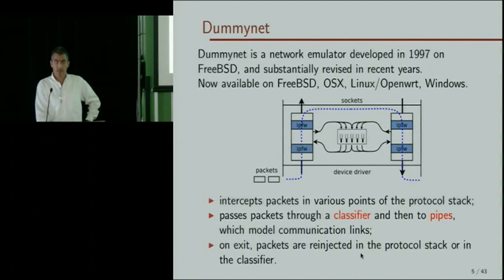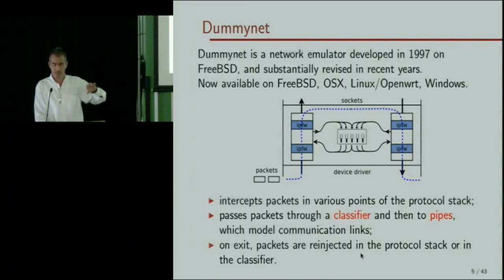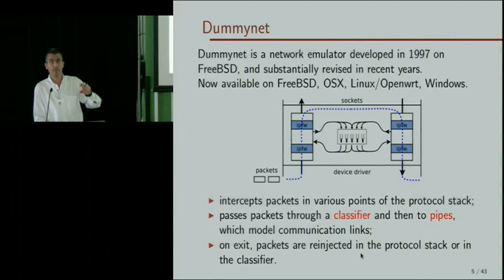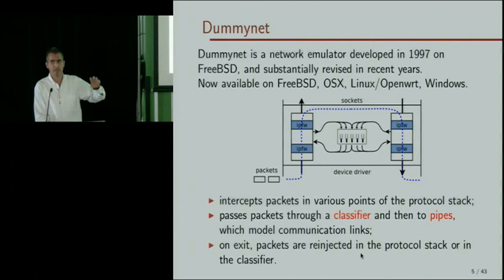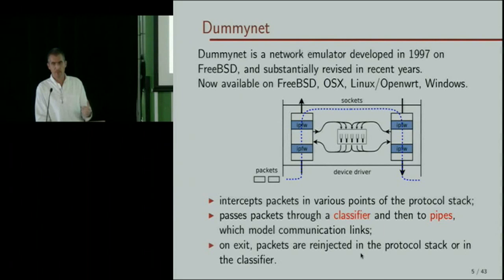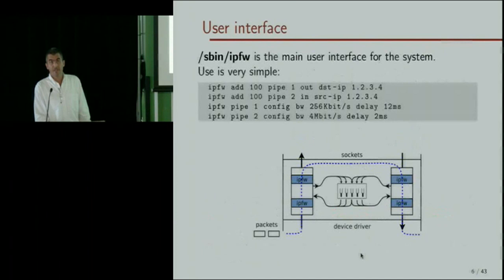As many similar systems, DummyNet intercepts packets at various points of the protocol stack — at layer two, layer three, or at the bridging level. It passes packets through a classifier that decides what to do with traffic, then puts selected traffic through an object called a pipe which models the behavior of a communication link. After some delay, packets come out of the pipe and are either injected into the protocol stack or sent back into the classifier, allowing complex topologies.